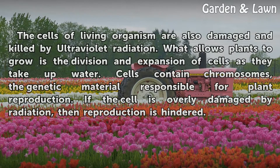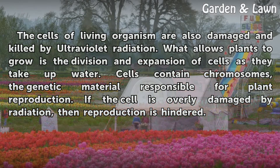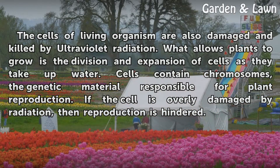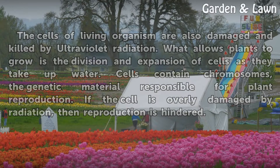The cells of living organisms are also damaged and killed by ultraviolet radiation. What allows plants to grow is the division and expansion of cells as they take up water. Cells contain chromosomes, the genetic material responsible for plant reproduction. If the cell is overly damaged by radiation, then reproduction is hindered.